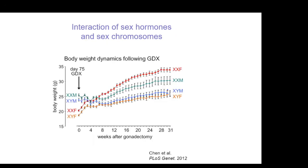Looking at the dynamic over about an eight-month period: at two and a half months, all four groups are gonadectomized. The gonadal males were weighing more than gonadal females. A month after removing gonadal hormones, the four groups weigh about the same — but then gradually the two XX groups become heavier and fatter than the others. This is a big effect, as large as the hormone effect, and you unmask it by taking out the hormones.